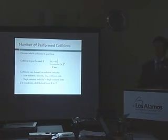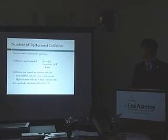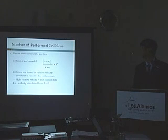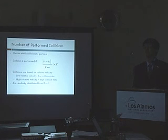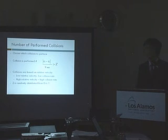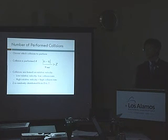Now we go through each one of these possible collisions, and we perform them if our relative velocity divided by V_max is larger than a randomly distributed number Z between 0 and 1. This makes sense because particles with low relative velocity are most likely traveling in the same direction and are unlikely to collide. On the other hand, particles with high relative velocity are most likely traveling in opposite directions and have a higher chance of collision.